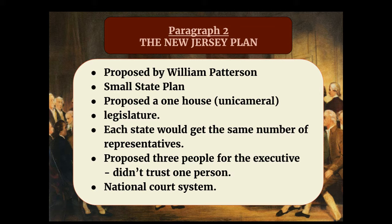The New Jersey Plan proposed that there would be multiple people in the executive — they did not trust one person to handle executive authority and wanted to divide it among at least three people. From that point of view, this would be a weaker government plan than the Virginia Plan. The one similarity between the New Jersey Plan and the Virginia Plan — Venn diagram style — is that the New Jersey Plan did propose that there be a national court system. So that is the one similarity.